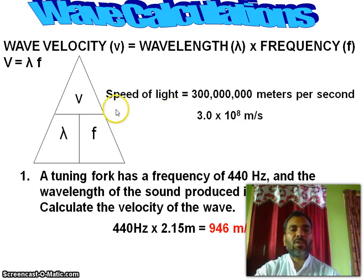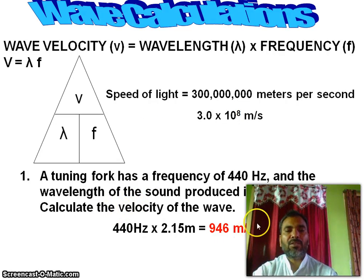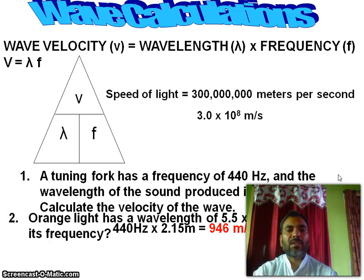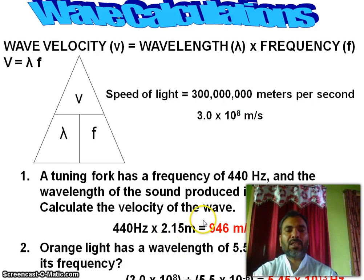A tuning fork has a frequency of 440 hertz and the wavelength of the sound produced is 2.15 meters. Calculate the velocity of the wave — you have the hertz, you have the meter, and then calculate meters per second. Orange light has a wavelength of 5.5 × 10⁻⁶ meters. What is its frequency? Calculate it using the wave velocity formula to get the answer in hertz.